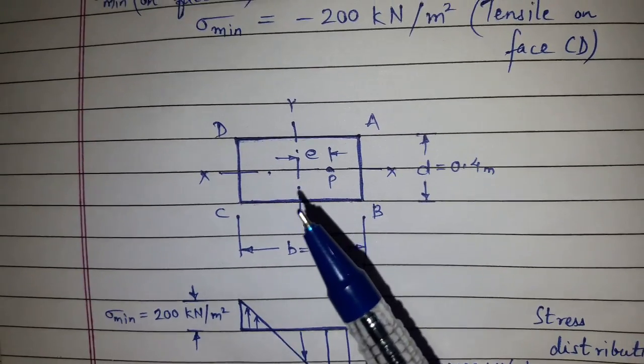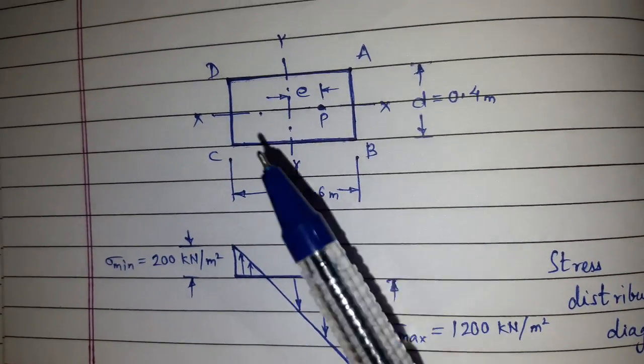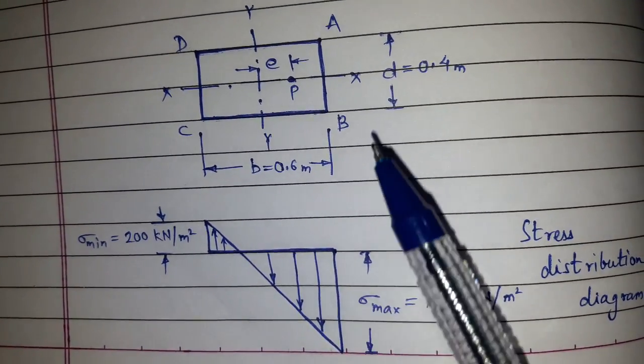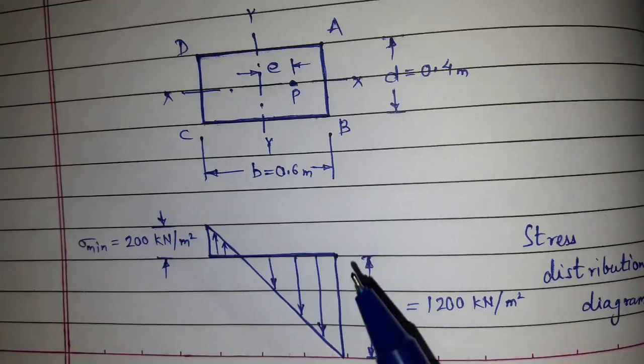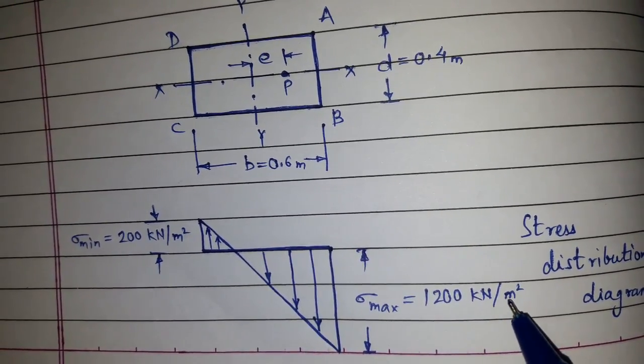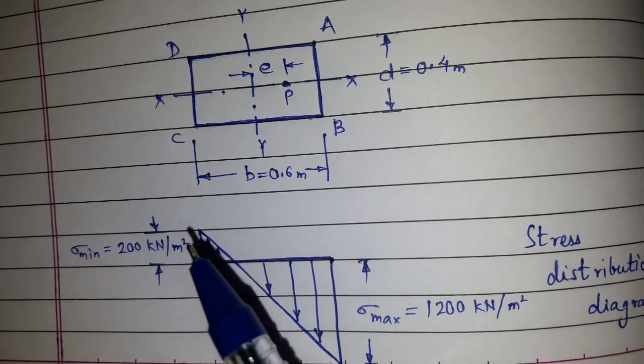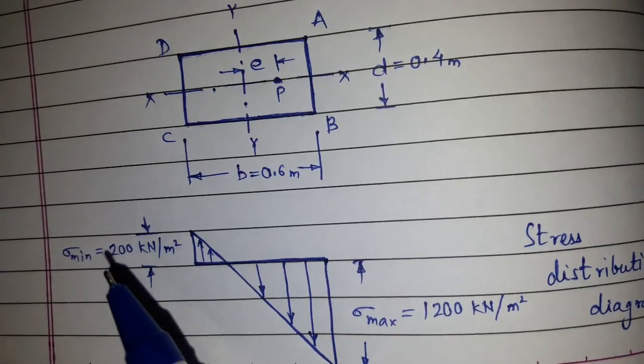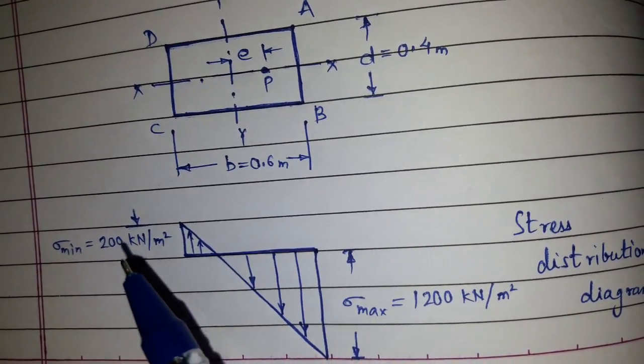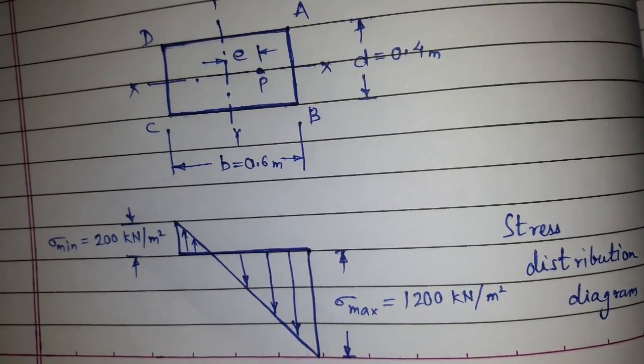Now we will draw the stress distribution diagram. This is the cross section. We have been given that on AB it is compressive and the value is sigma maximum is 1200 kN per meter square. It is given that sigma minimum is tensile which is 200 kN per meter square. No need to put sign as we have shown already in the diagram. Here we will only write the magnitude. This is the stress distribution diagram.